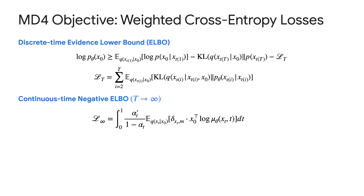Previous work on discrete diffusion used the same ELBO but overlooked that it can be greatly simplified. If you plug in the analytic formulas for our transition distributions — which have a simple two-branch logic — and compute the KL divergences analytically, everything simplifies. It simplifies further when you push the number of time steps to infinity, considering all times from zero to one. The final objective becomes a simple integral over a weighted cross-entropy loss.